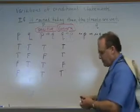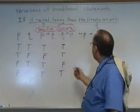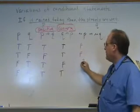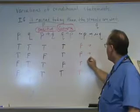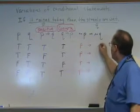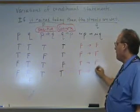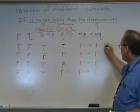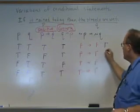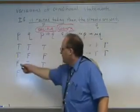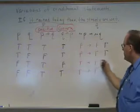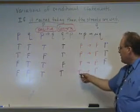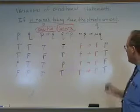We have to consider a couple things. Here is not P — that's going to be false, false, true, true. And not Q would be false, true, false, true. If false, then false is true. If false, then true is true. If true, then false is false — the condition was met and the promise was not kept, so that's false. If true, then true is true.